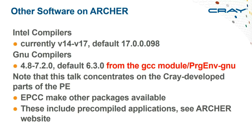Beyond Cray-specific components, other compilers are available: Intel ranging from version 14 to 17 (current default 17.0.0.98) and GNU from 4.8 to 7.2 (current default 6.3.0). Note that without loading a module you get the system-supplied GCC which is quite old; loading the GCC module or the GNU programming environment gives you the much newer 6.3.0. The system GCC is there for building software compatible with the kernel — what was installed with SUSE.